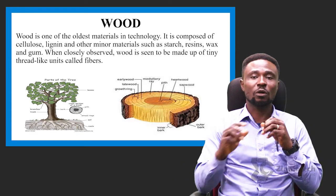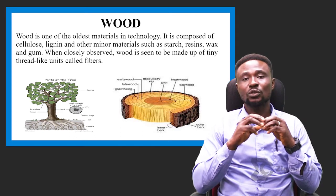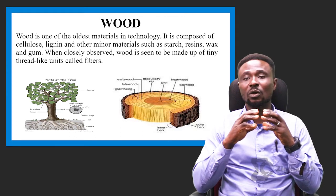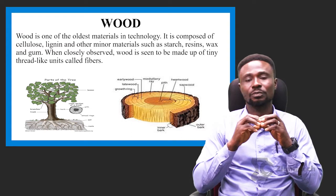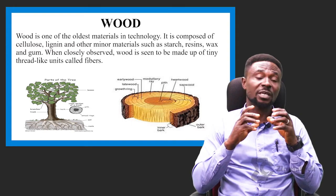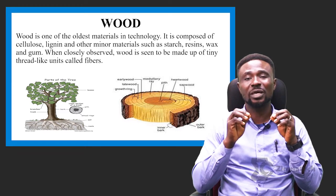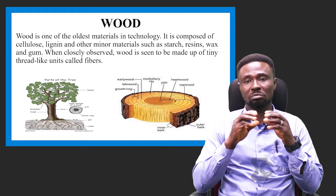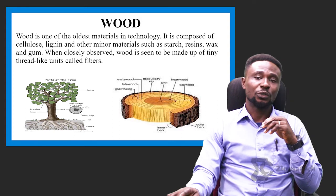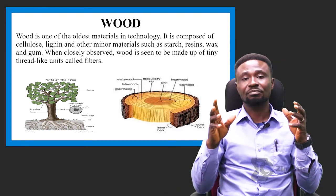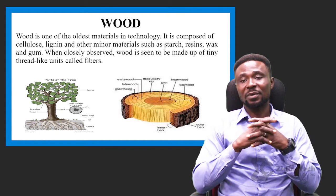Wood is one of the oldest materials in technology. It is composed of cellulose, lignin, and other minor minerals such as starch, resin, wax, and gum. When closely observed, you'll see that wood is made up of thin thread-like units called fibers. If you look at the picture, you'll see that there is a thin thread-like structure — that is the fiber you can see.